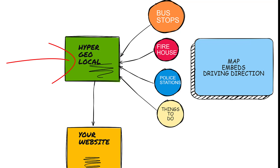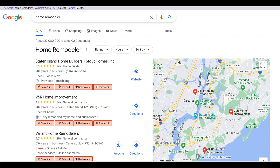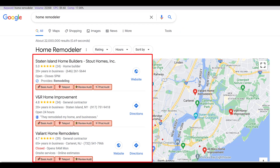In this video I'm going to show you how to create a hyperlocal website, and on that website you're going to embed bus stops, your local firehouses, police stations, things to do, ATMs, and more — all by creating map embeds with directions going to your address. So you're watching this video because you're trying to rank in the Google 3 pack and you may have a lot of competition in your area. Sometimes we have to think out of the box, and this is something I've been working on and use for my clients.